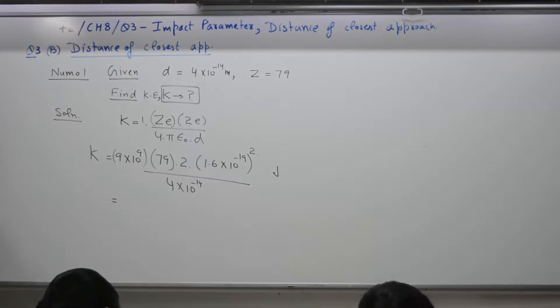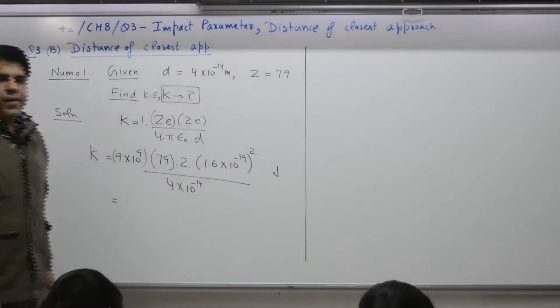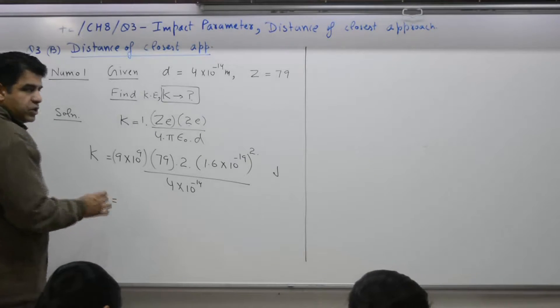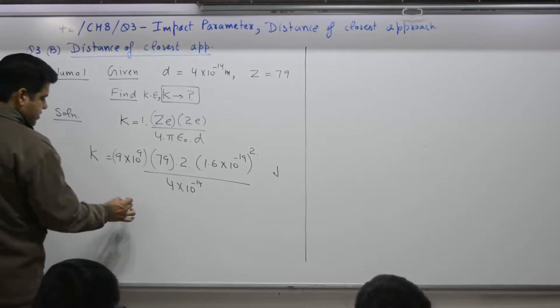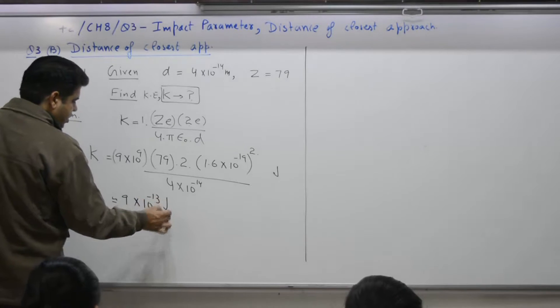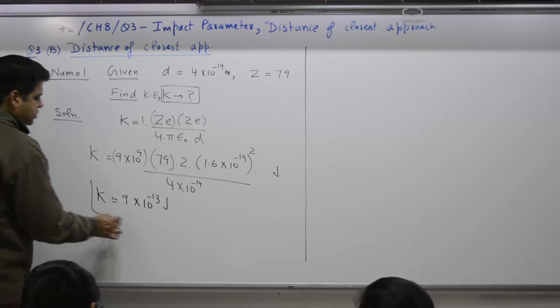K is equal to how many joule? Then we will change it to mega electron volt. Find it in joule. What is the answer in joules? Approximately 9 into 10 is power minus 13 joule.